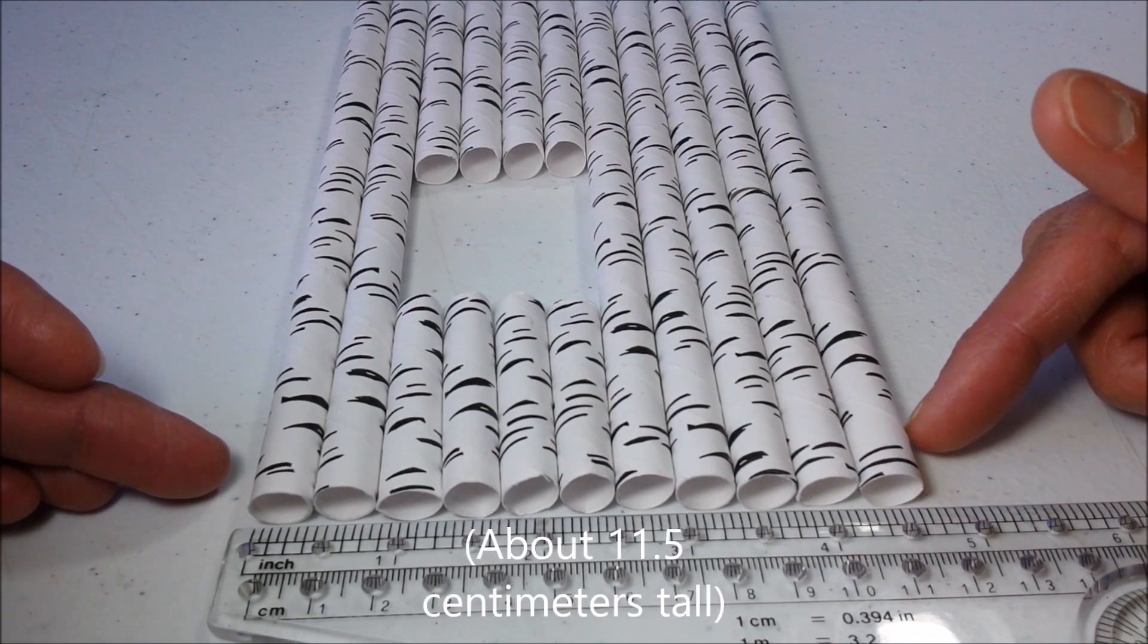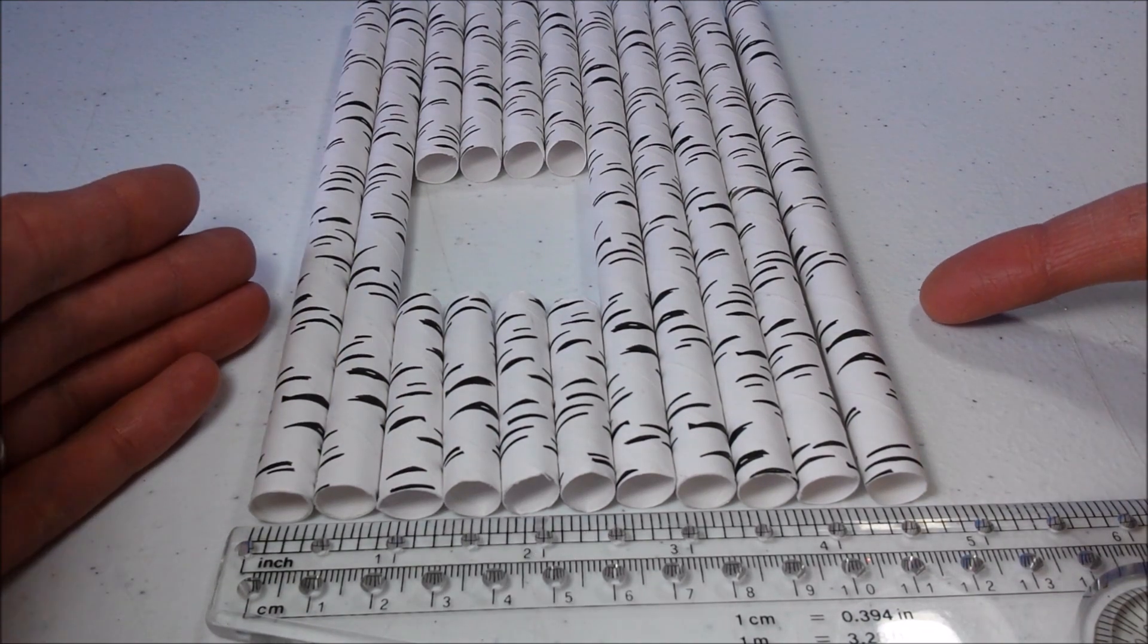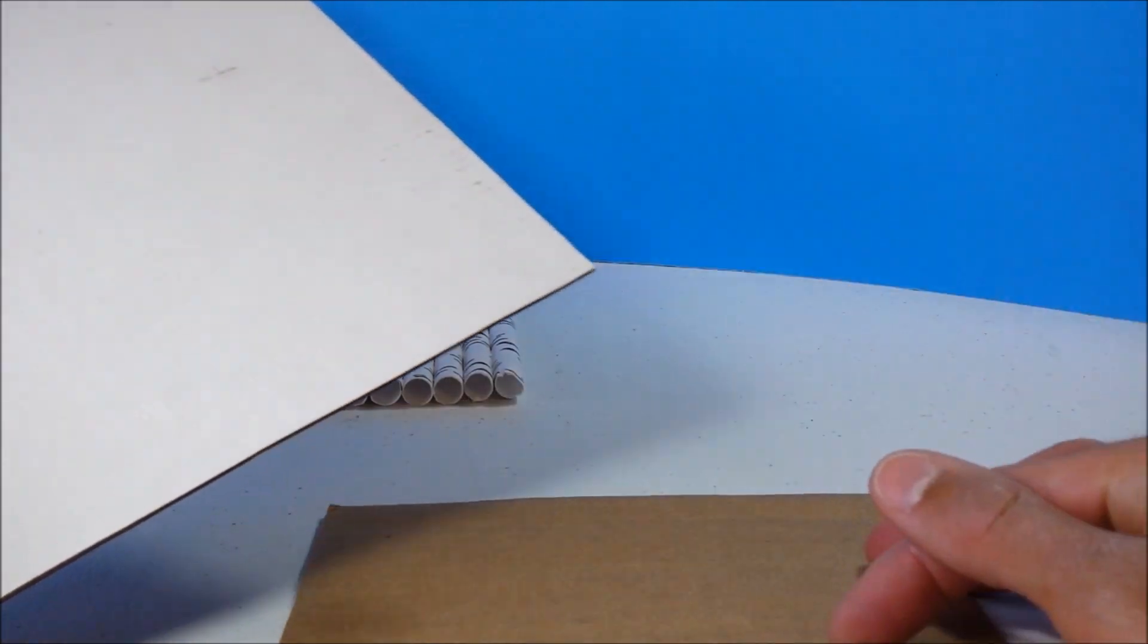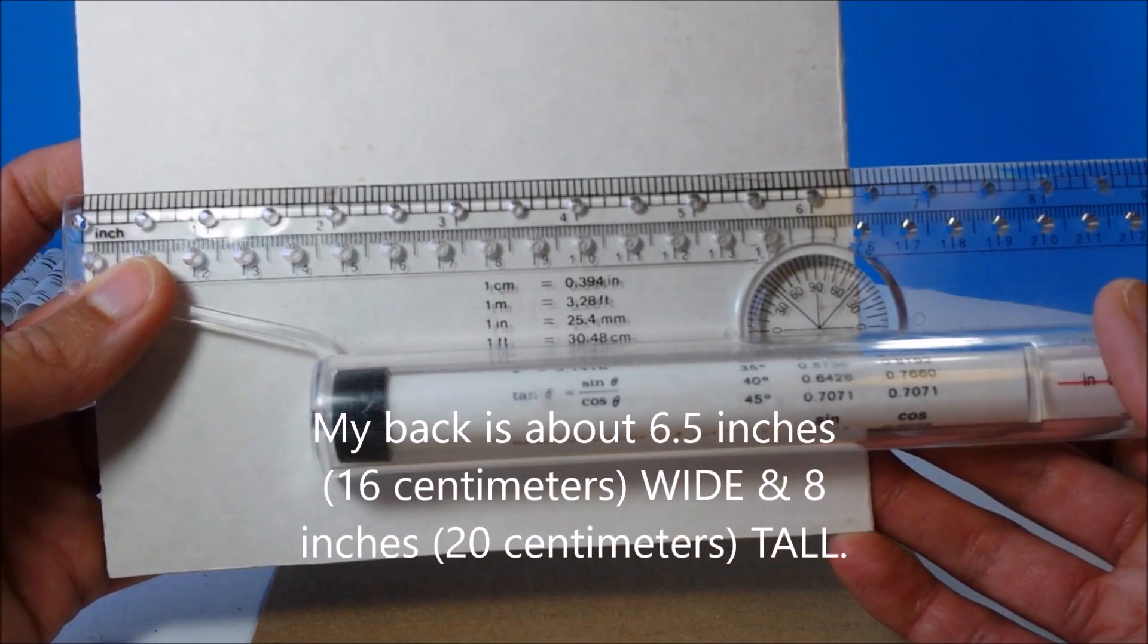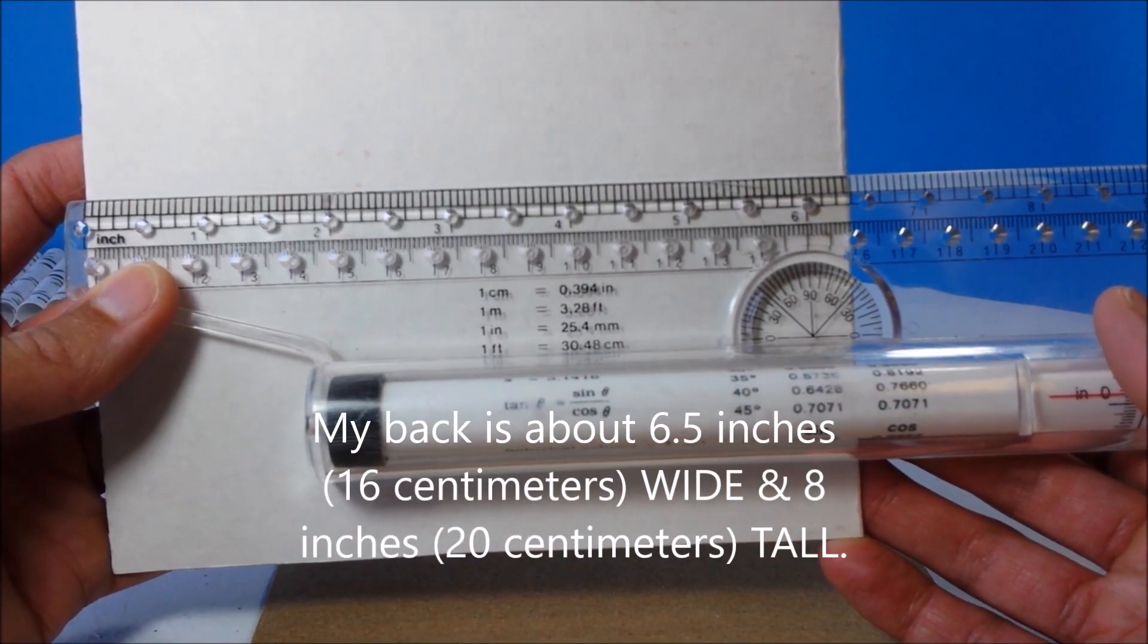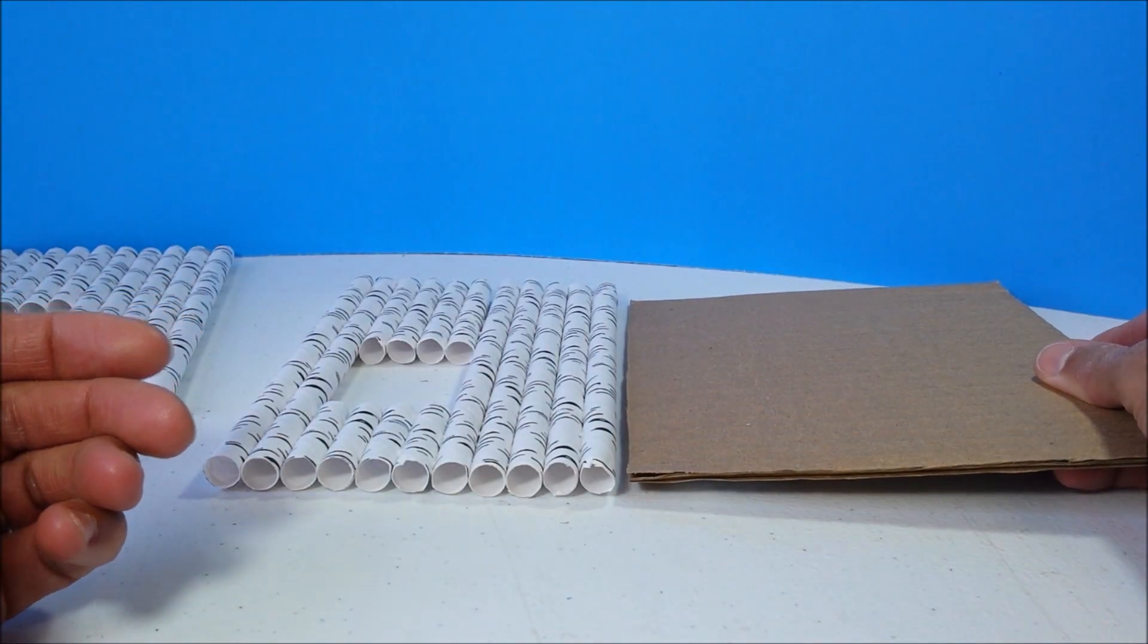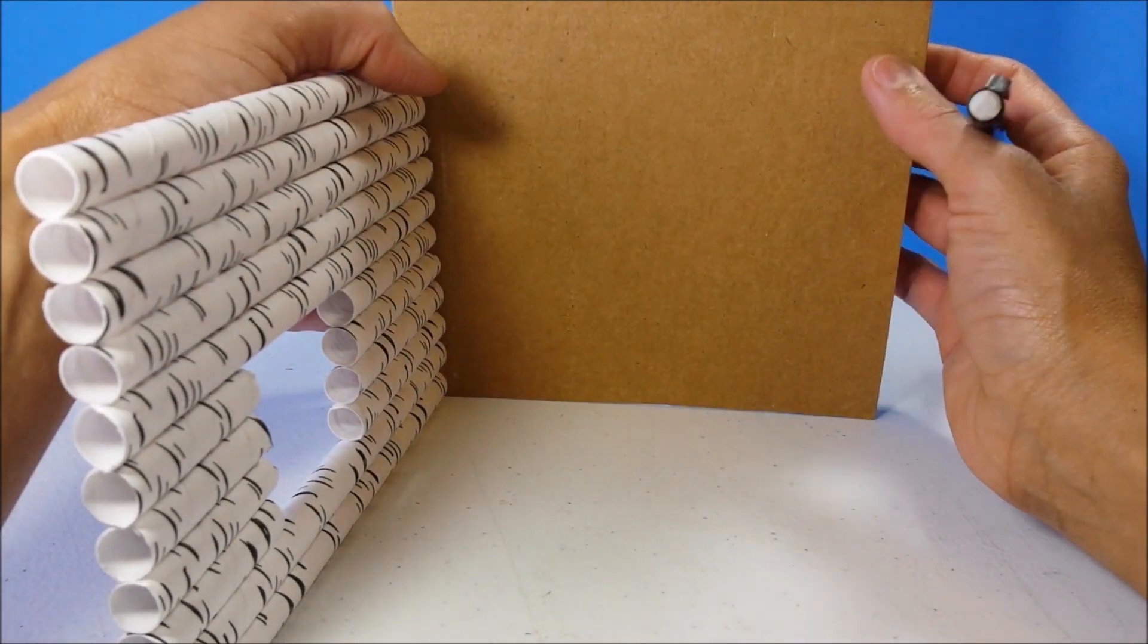Glue your pieces together and do the exact same thing for your opposite wall. Next, I cut out pieces of cardboard for my back and my base. My base is the same width and as long as my walls.